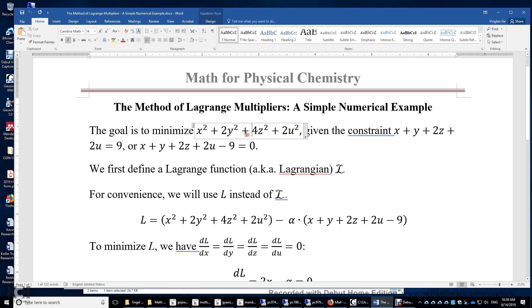However, if we need to minimize this function under a constraint x plus y plus 2z plus 2u equals 9, then the minimum value of this function can no longer be 0. Why? Because we have to satisfy this. So if y equals z equals u is 0, x cannot be 0, x must be 9, and then the function value becomes 81.